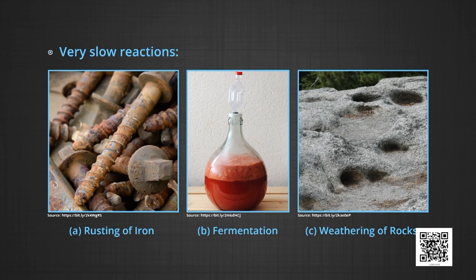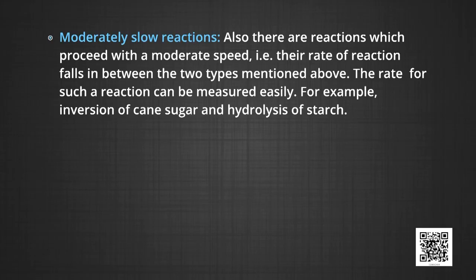The second type of reactions are very slow reactions. Some reactions are very slow — that is, they require months or even years for completion. For example, rusting of iron in the presence of air and moisture, fermentation — the process of conversion of sugar to alcohols — and the process of weathering of rocks, all occur at an extremely slow rate. Rates of such reactions do not possess any significance. The third type are the moderately slow reactions. There are reactions which proceed with a moderate speed — that is, their rate of reaction falls in between the two types mentioned above. The rate of such reactions can be measured easily. For example, inversion of cane sugar and hydrolysis of starch.